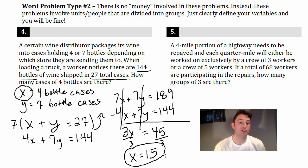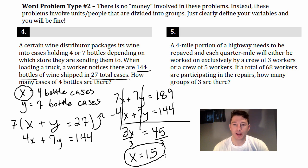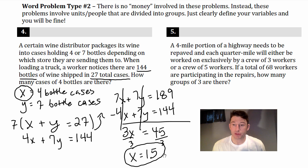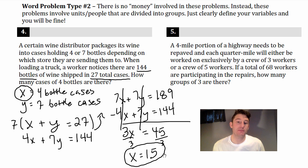You just have to get good at figuring out the equations. Let's practice another one. A four-mile portion of a highway needs to be repaved, and each quarter mile will be worked on exclusively by either a crew of three workers or a crew of five workers. If a total of 68 workers are participating in the repairs, how many groups of three are there?